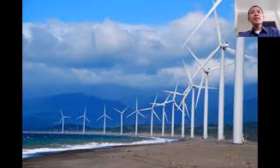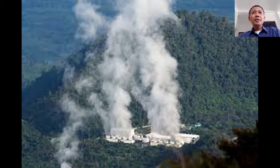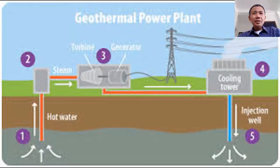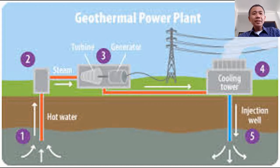The next one is the geothermal power plant. These power plants are mostly located near a volcano. It uses magma, or the heat of the earth, to create steam. The steam is used to move the turbine to generate electricity from a dynamo or generator. It is called geothermal simply because geo means earth and thermal means heat, so it basically uses the heat of the earth to generate electricity.